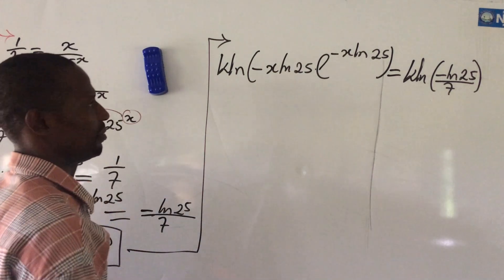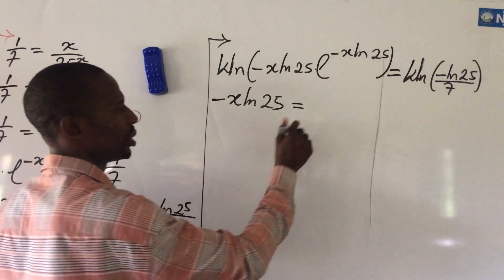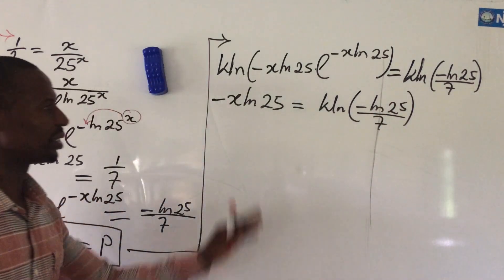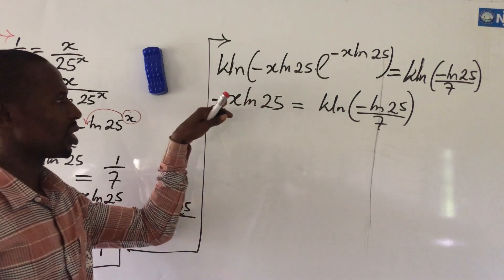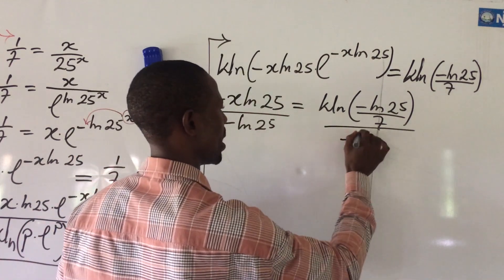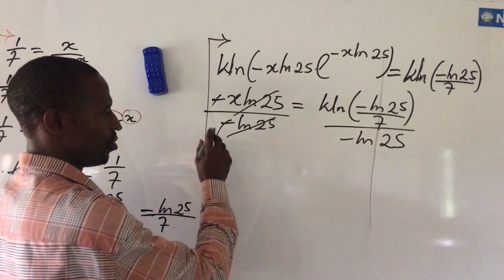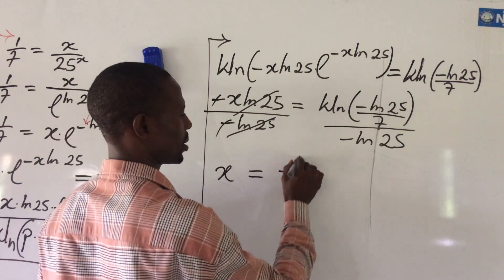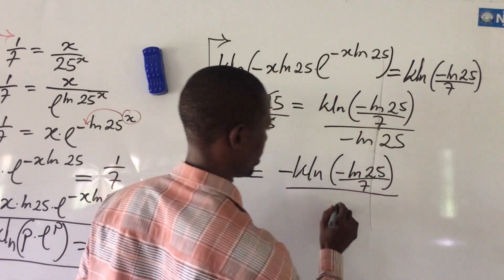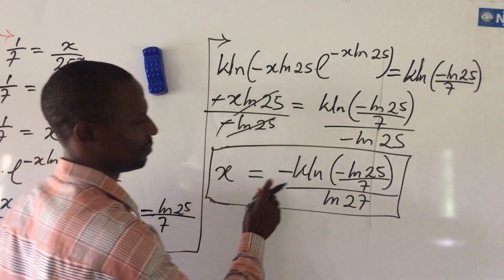The left-hand side simplifies to minus x·ln(25), equal to W of minus ln(25) over 7. We're looking for x, so we divide both sides by minus ln(25). This gives us the final answer: x equals negative W of [ minus ln(25) over 7 ], all over ln(25).